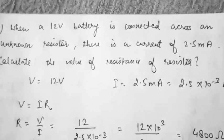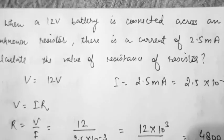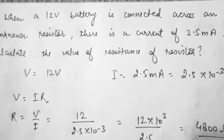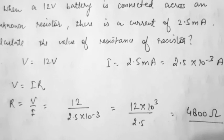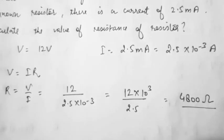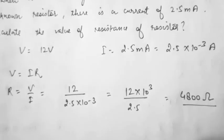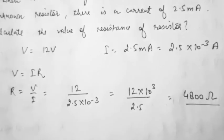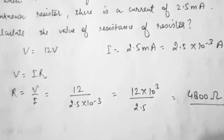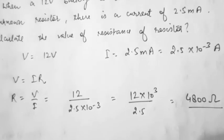The next question is: when a 12 volt battery is connected across an unknown resistor, there is a current of 2.5 milliampere. The current is in milliampere, so we must convert to ampere since we always use standard units in physics. Given V = 12 V and I = 2.5 × 10⁻³ A. Using R = V/I = 12 / (2.5 × 10⁻³), we get the resistance as 4800 ohm.